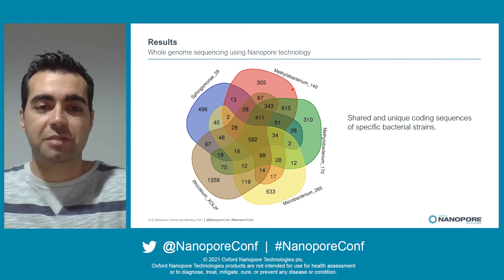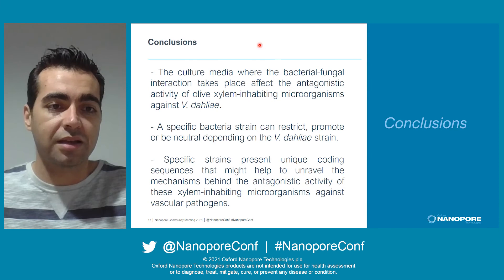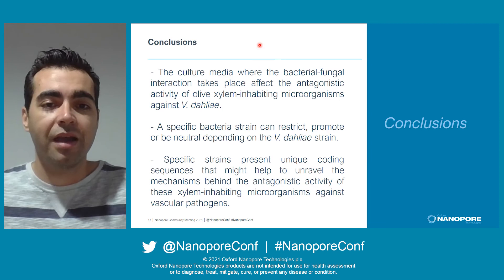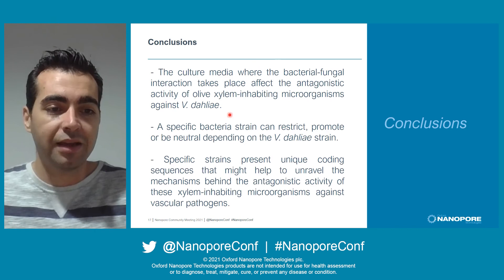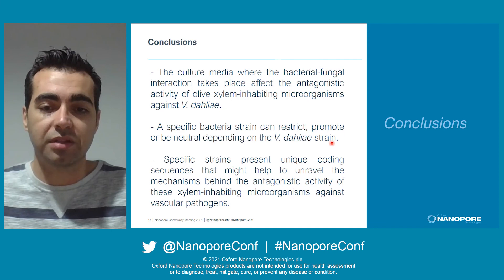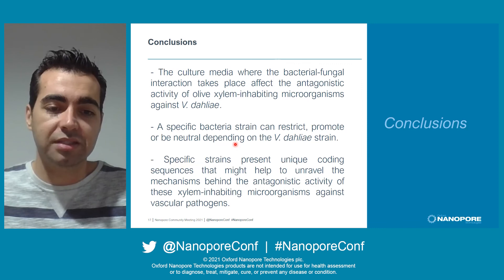Finally, as a conclusion, we can say: first, that the culture medium where the bacteria-fungal interaction takes place affects the antagonistic activity of xylem-inhabiting microorganisms against Verticillium dahliae; second, that a specific bacterial strain can restrict, promote, or be neutral depending on the Verticillium dahliae strain; and third, that specific strains present unique coding sequences that may help unravel the mechanisms behind the antagonistic activity of these xylem-inhabiting microorganisms against vascular pathogens.